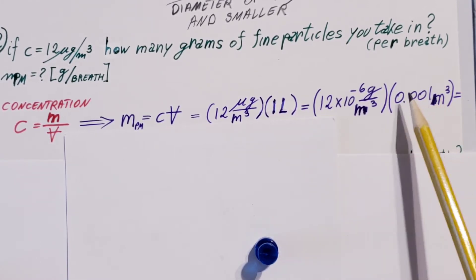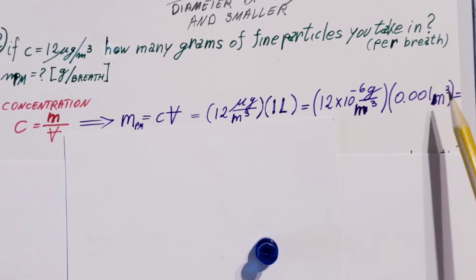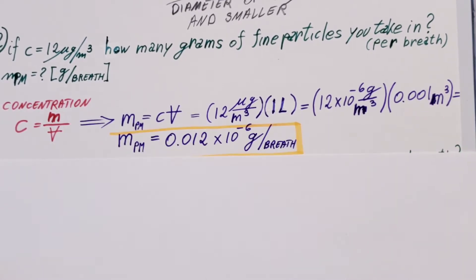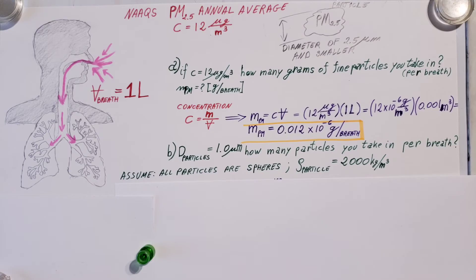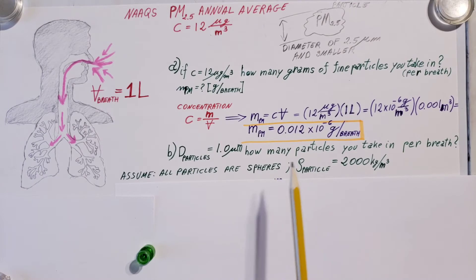If we calculate this, we can see that the total mass of PM we're going to have is 0.012 times 10 to the negative 6 grams per each breath that we breathe in.